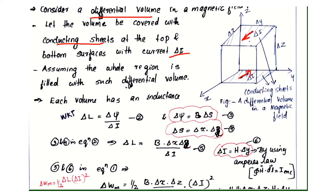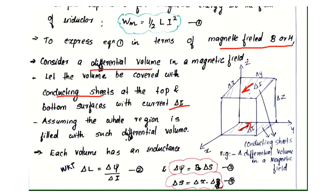The flux δψ = B · δS, where δS is the surface area. The small area considered is width times height, that is δx times δz. So δL = B · δx · δz divided by δI. This is equation number 5.